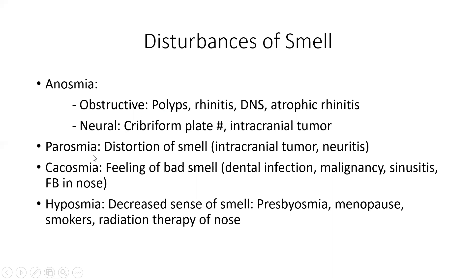Another disturbance of smell is parosmia, which means distortion of smell — sometimes called perverted smell — where the patient smells something other than the actual smell of the substance. It is seen in intracranial tumor and involvement of the olfactory neurons, that is neuritis. Cacosmia is the feeling of bad smell due to some internal pathology, such as dental infection, malignancy of the nose or paranasal sinuses, sinusitis, or a foreign body in the nose.